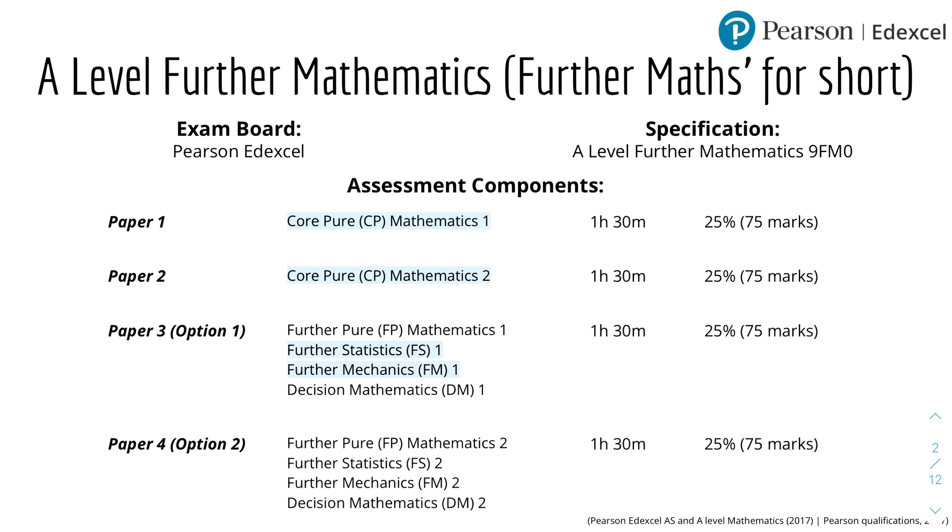So paper 1 will be assessing you on Core Pure or CP Mathematics 1, and paper 2 will be Core Pure 2. And paper 3, which is an option, option 1, you can choose between these modules: Further Pure, Further Statistics, Further Mechanics, and Decision Mathematics. And paper 4 is the second option, which you can choose between Further Pure 2, Further Stats 2, Further Mechanics 2, and Decision Mathematics 2.